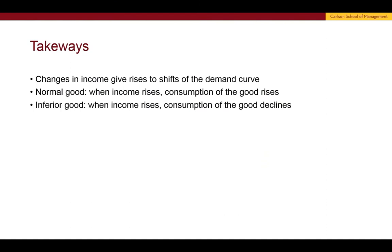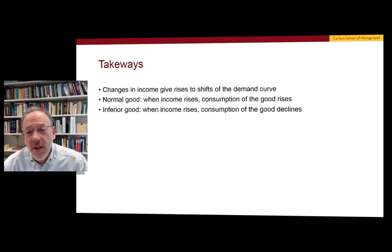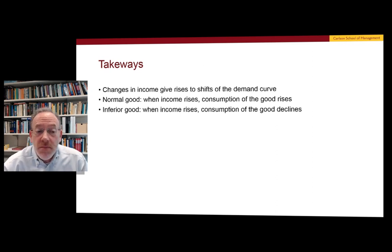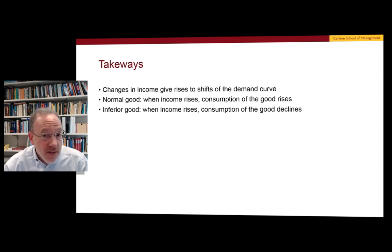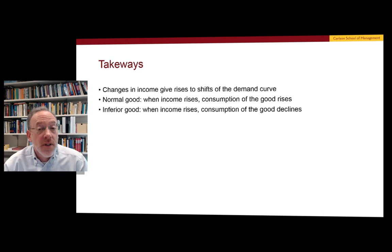A few quick takeaways. First, changes in income give rise to shifts of the demand curve — in contrast to changes in price, which gave rise to movements along the curve. A normal good is one where when income rises, the consumption of the good also rises. Finally, an inferior good is one where when income rises, consumption of the good declines.